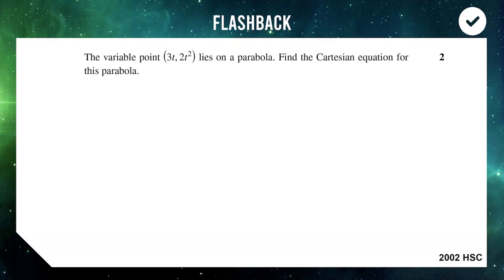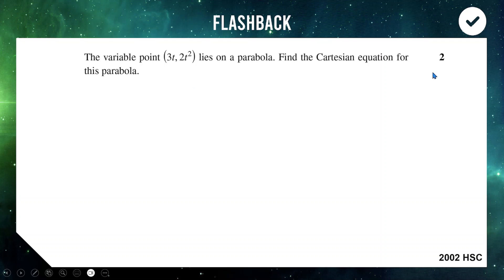G'day legends, welcome back to another Extension 1 math lesson. Starting off with a flashback to my last Extension 1 video — we've got a HSC question from a couple of decades ago. Variable point (3t, 2t²) lying on a parabola — that's a parametric representation of a parabola. Find the Cartesian equation for the parabola, for 2 marks.